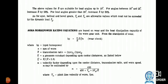AGMA horsepower rating equations are based on wear and heat dissipation capacity of the worm gear unit. From the standpoint of wear: HP = (N / R) × K × Q × M, where HP = input horsepower, N = RPM, R = transmission ratio, K = pressure constant depending on center distance.